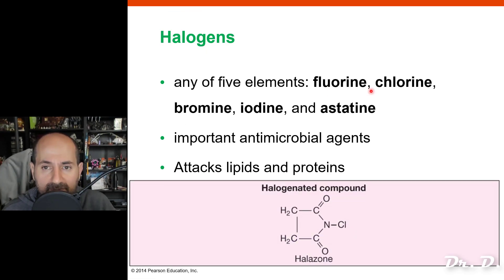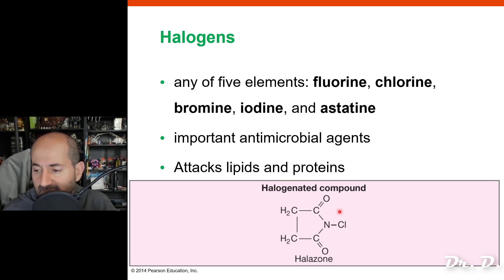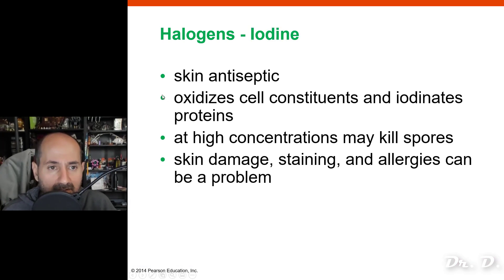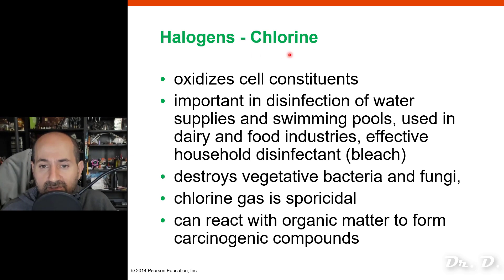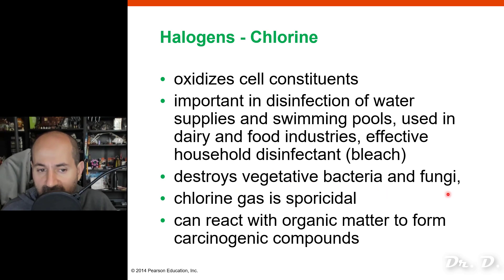Halogens — the elements fluorine, chlorine, bromine, and iodine — attack lipids and proteins and disrupt microbial growth. Iodine is commonly used as a skin antiseptic; in the healthcare setting, iodine is applied to living tissue to keep areas contamination-free. Chlorine is used in swimming pools because it can destroy vegetative bacteria and fungi and helps keep microorganisms out.